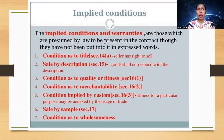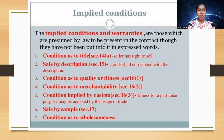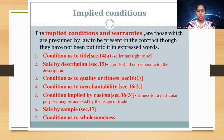Implied conditions and warranties are those which are presumed by law to be present in the contract — they have not been put into express words but are already implied. The types of implied conditions are: condition as to title, sales by description (Section 15), condition as to quality or fitness (Section 16), condition as to merchantability (Section 16(2)), condition implied by custom or fitness for a particular purpose, and conditions in sales by sample.